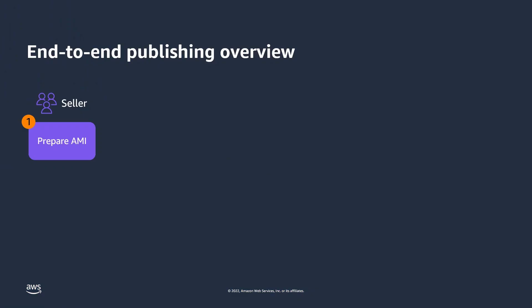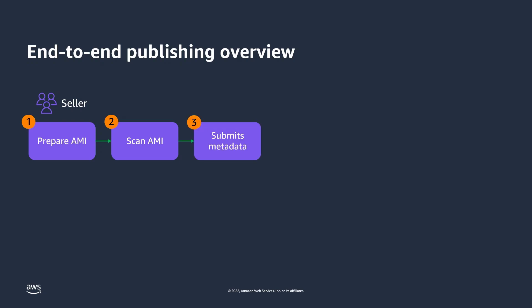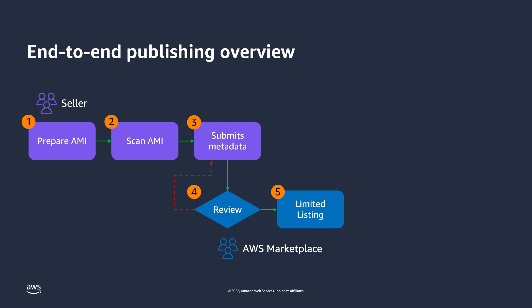As the seller of an AMI product, you'll prepare the AMI in your AWS seller account. You'll submit the AMI for scanning in the AWS Marketplace Management Portal. Next, you'll submit the product's metadata and pricing information. If you are using an AWS CloudFormation template for delivery, include the location of the template. AWS Marketplace then reviews your submitted materials and establishes a limited listing URL for your product.